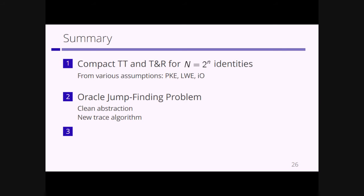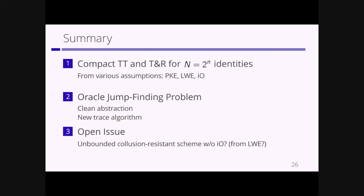In summary, we proposed a compact traitor tracing scheme and a trace-and-revoke scheme for exponentially many identities from various assumptions such as standard public-key encryption, LWE, or indistinguishability obfuscation. To achieve this, we proposed a general abstraction called the oracle jump-finding problem and a new trace algorithm using a sophisticated binary search. There is an open issue: for the most compact scheme in our result we need indistinguishability obfuscation — can we construct such a scheme without it, for example using only the LWE assumption? That's it. Thank you for your attention.